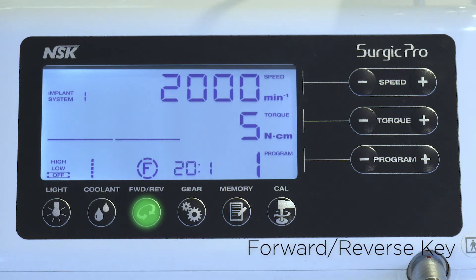Use to select direction of rotation. Press the key once to change the rotation direction. Once in reverse, the control unit audibly warns with a beeping sound.